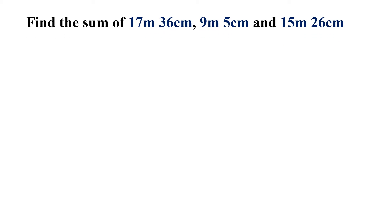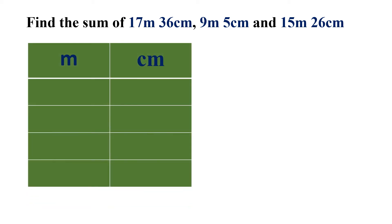Find the sum of 17 meters 36 centimeters, 9 meters 5 centimeters, and 15 meters 26 centimeters. Just like the previous problem, we write the numbers in a column, making sure each number is in the proper place. We start from the right hand side: 6 plus 5 plus 6 is equal to 17.